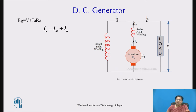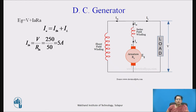Here you can see in this diagram, the shunt field winding resistance is given and the armature winding resistance is given, and the generated EMF is given as V plus IA·RA, and IA is given as ISH plus IL. But ISH equal to V by RSH because the total voltage V will drop across the shunt field winding. So we can calculate the shunt field current equal to 250 divided by 50 equal to 5 ampere, that is ISH.